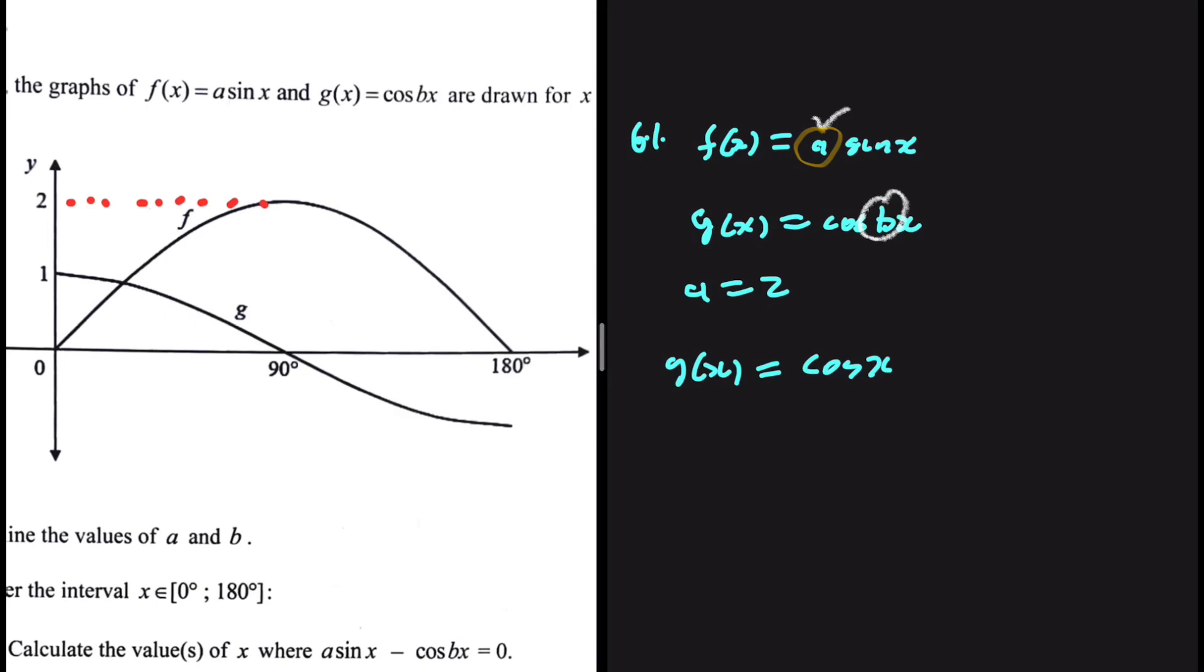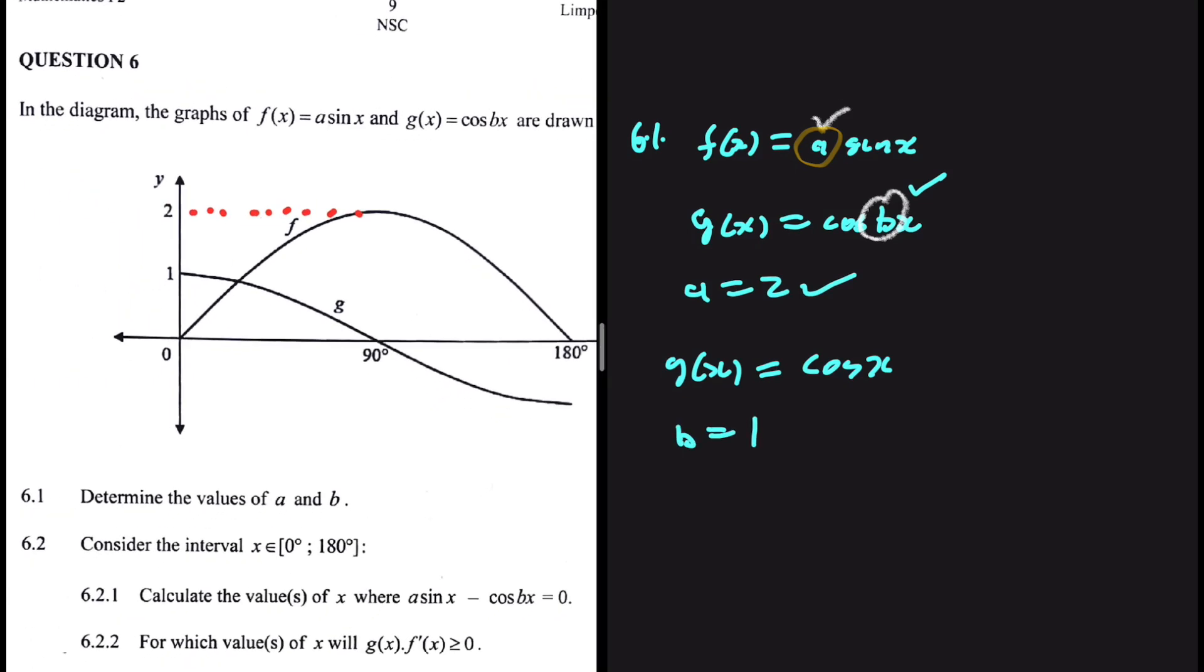So the value of b in g of x should equal 1 because that is just the shape of cos x. So what are we saying? a equals 2 and b equals 1. That is 6.1.